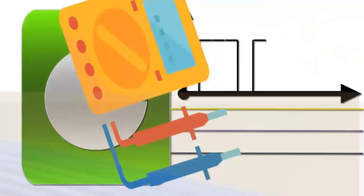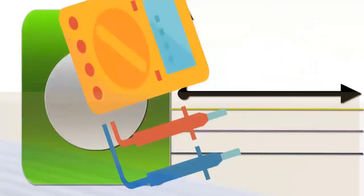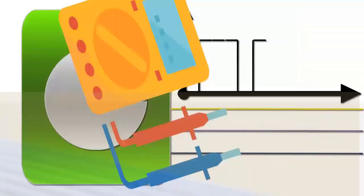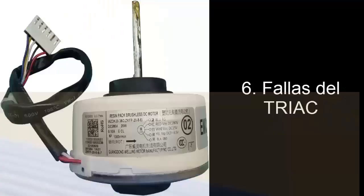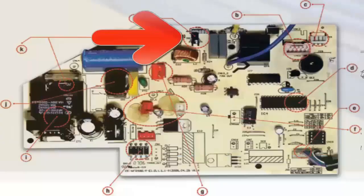Manually rotate the fan to check the voltage signal, which should change quickly. If the sensor works correctly, focus on the electronic module. Otherwise, visually inspect and, if necessary, replace the sensor component.